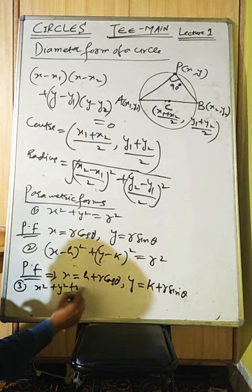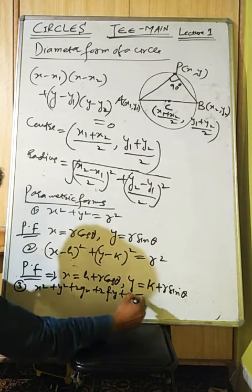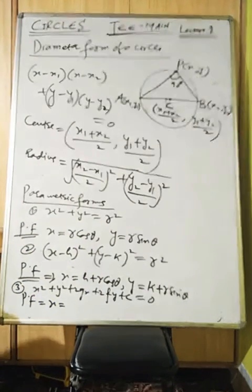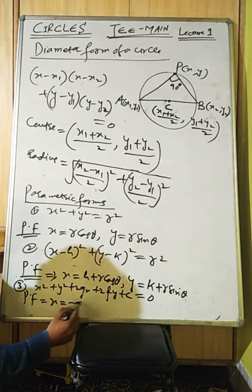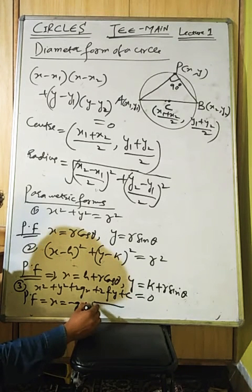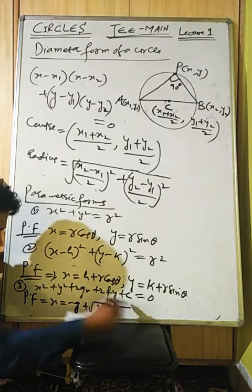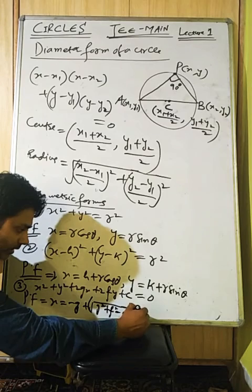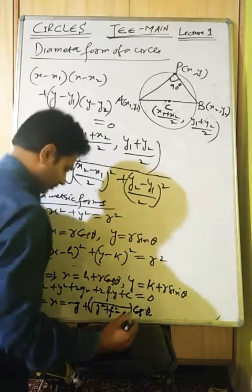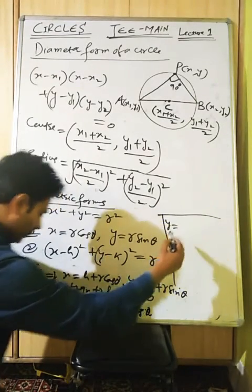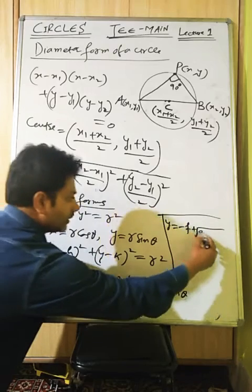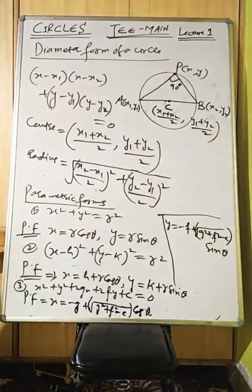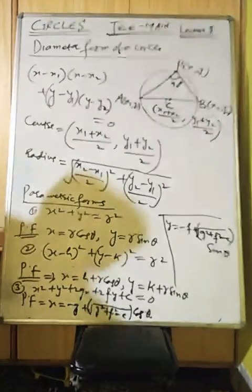For the general equation x² + y² + 2gx + 2fy + c = 0, the parametric form is: x = −g + √(g²+f²−c)·cosθ, and y = −f + √(g²+f²−c)·sinθ. These are the parametric forms for the general circle.